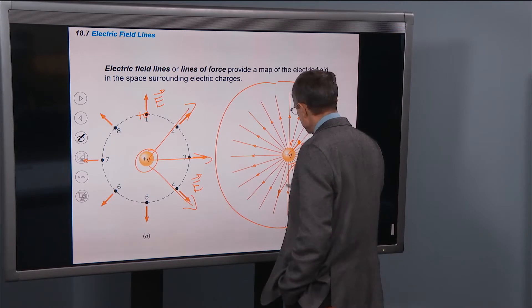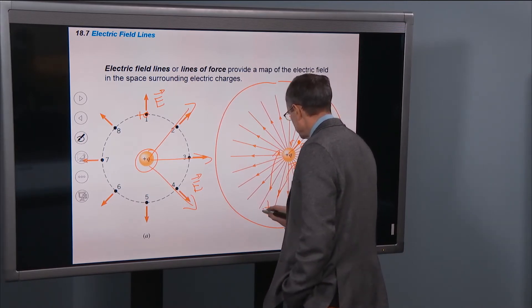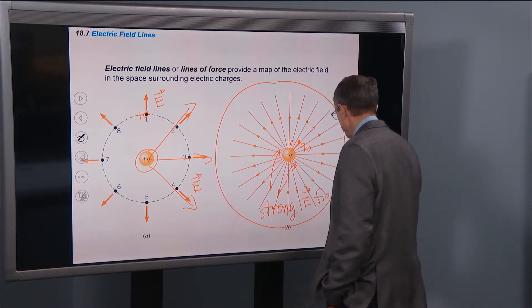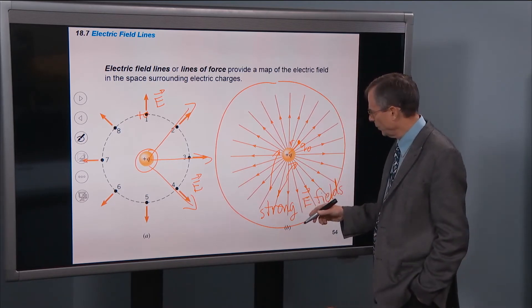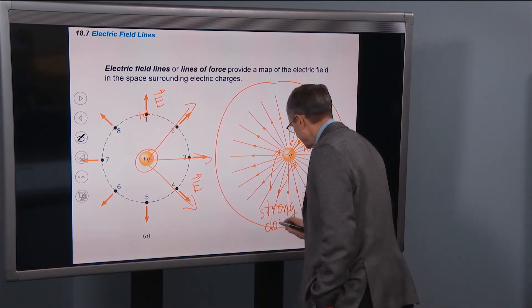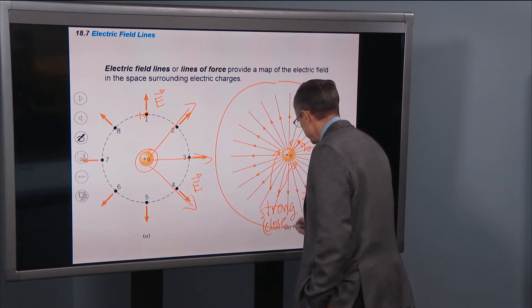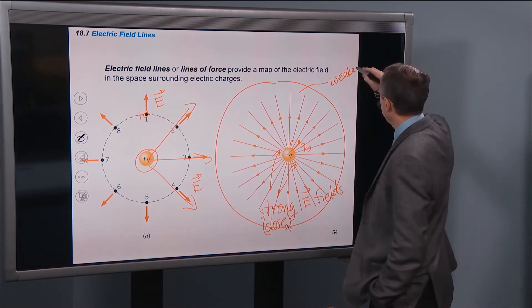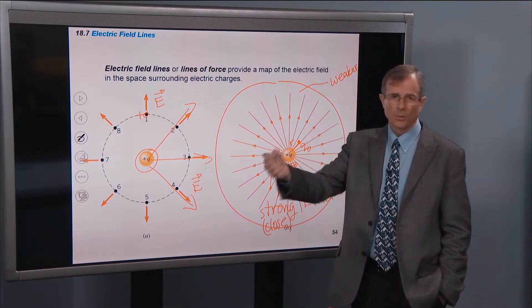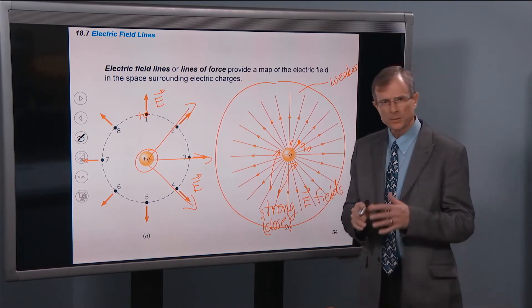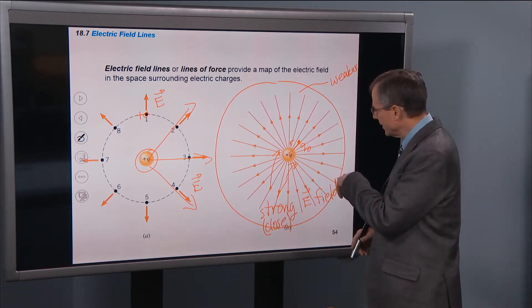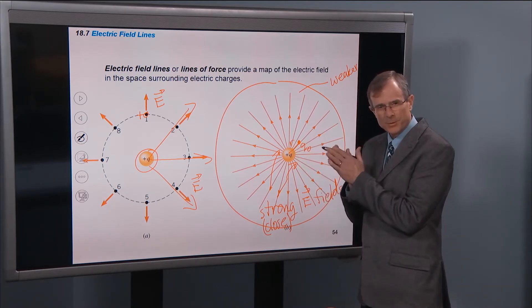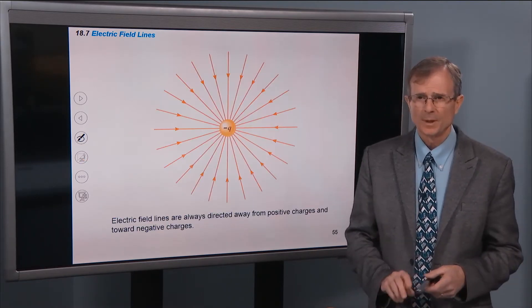The regions close to the charge are where you get strong electric fields. Out here, farther away, it's going to be weak — weaker. The farther you get away, the more R increases, 1 over R squared decreases, and the electric field gets weaker and weaker. The observation here is that where these electric field lines are closely spaced, the electric field is strong.